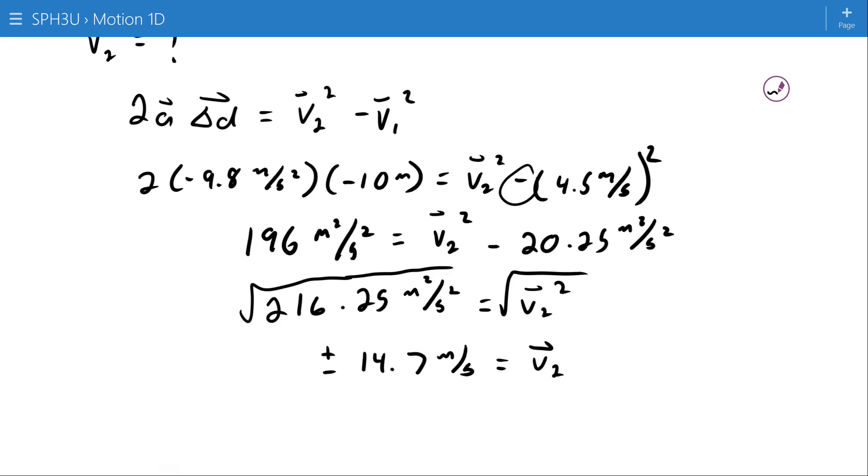In this particular case, because the object went up and came back down, it's falling as it comes back down, so I'm interested in the negative root. So V2 is equal to negative 14.7 meters per second, or 14.7 meters per second down.